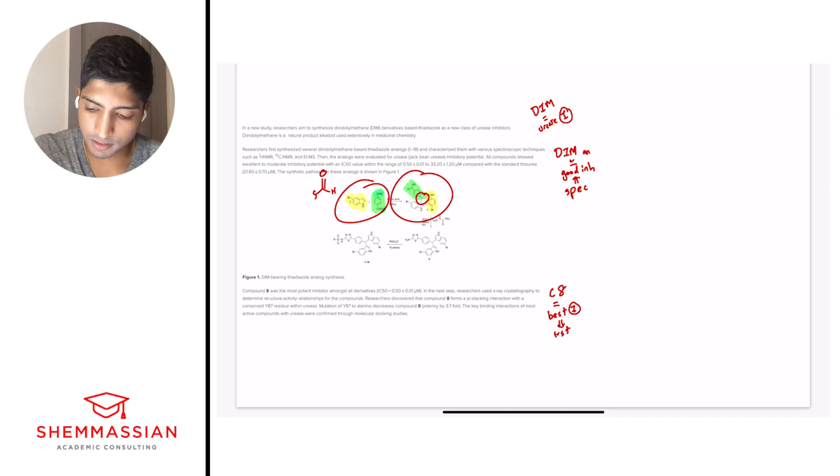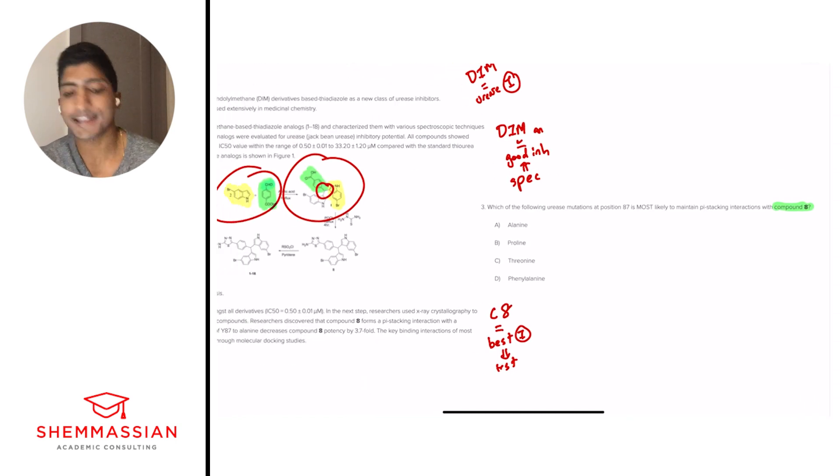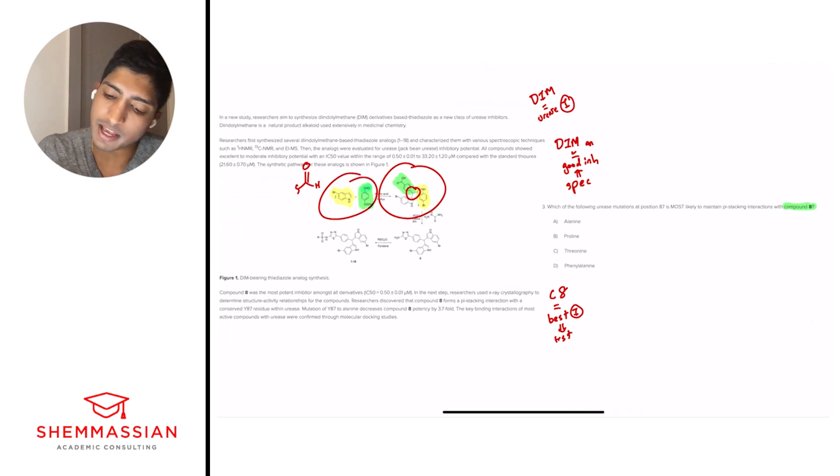So now let's go on to question number three. Which of the following urease mutations at position 87 is most likely to maintain pi-stacking interactions with compound A? Is it A, alanine, B, proline, C, threonine, or D, phenylalanine? Right away, we should remember what we wrote in our outline. This question is talking about compound A. And we remember that was mentioned a lot in our last paragraph, with it being this best inhibitor. And so now we go on to position 87. That was also mentioned down here. And we see pi-stacking. We see all these words aligning from our question to this one area of this passage.